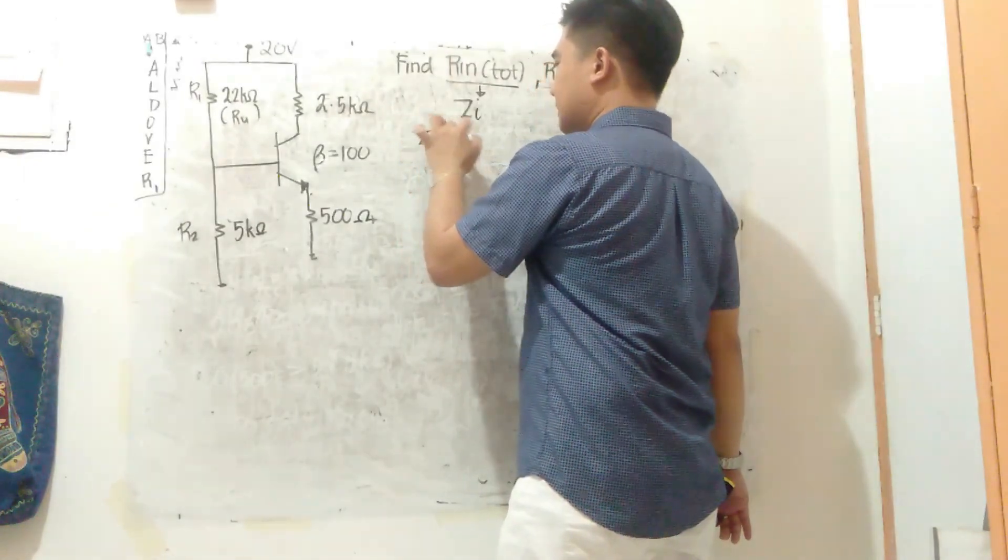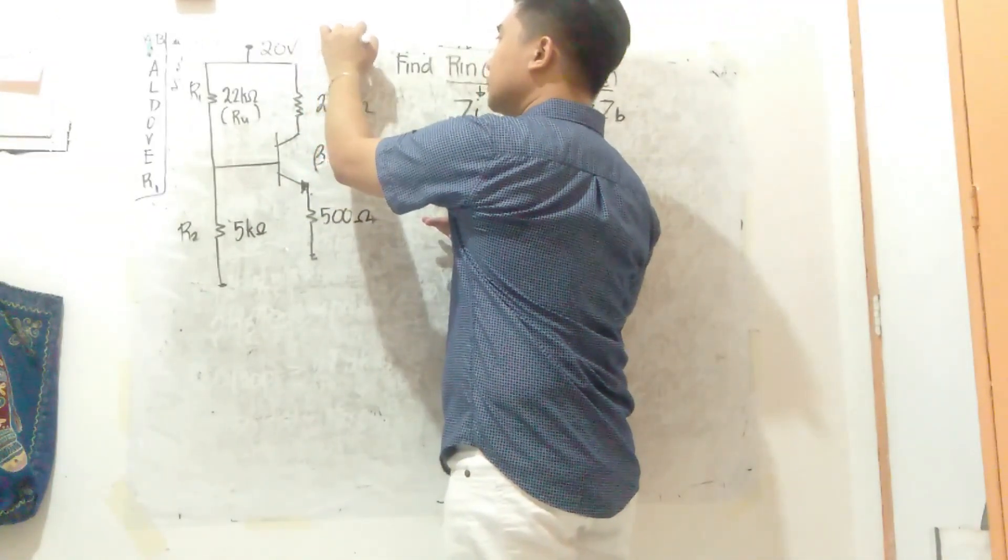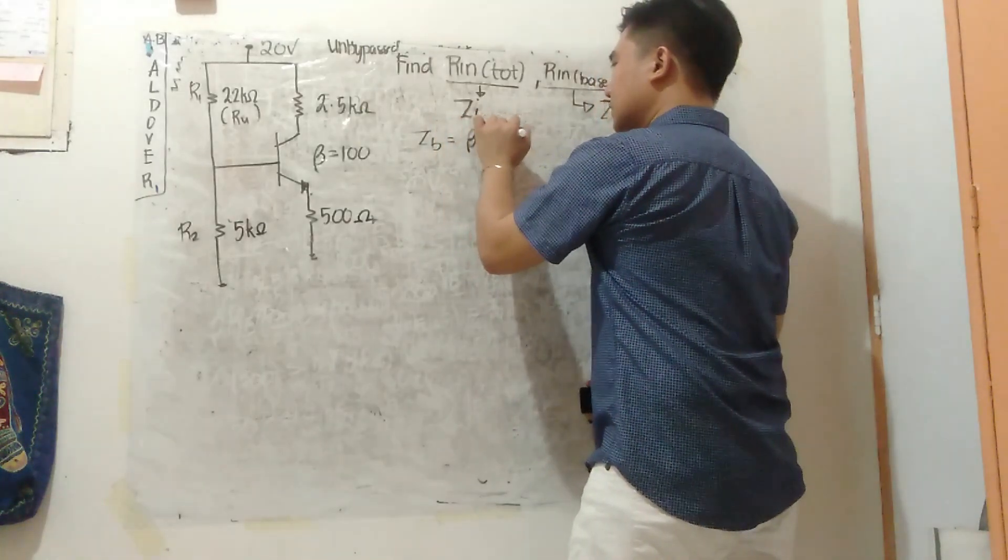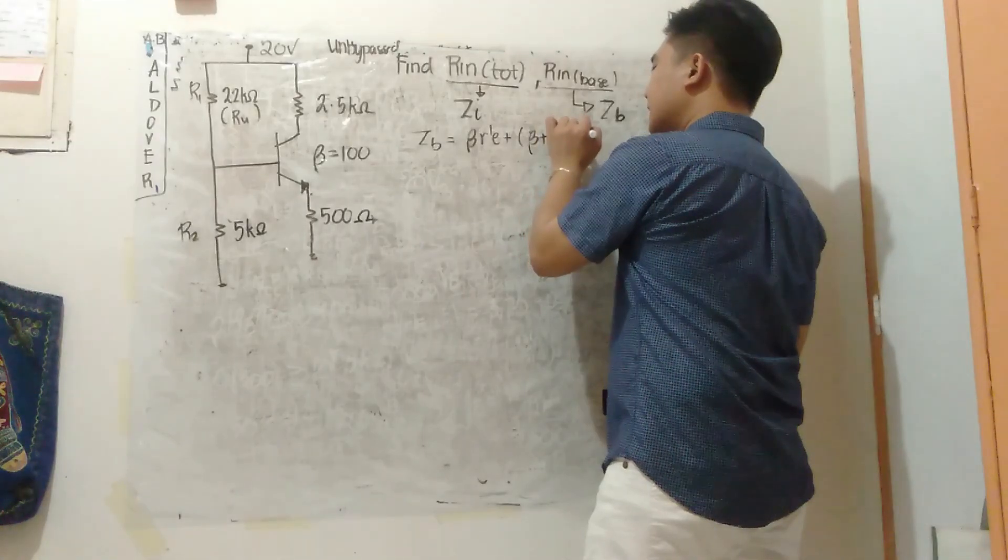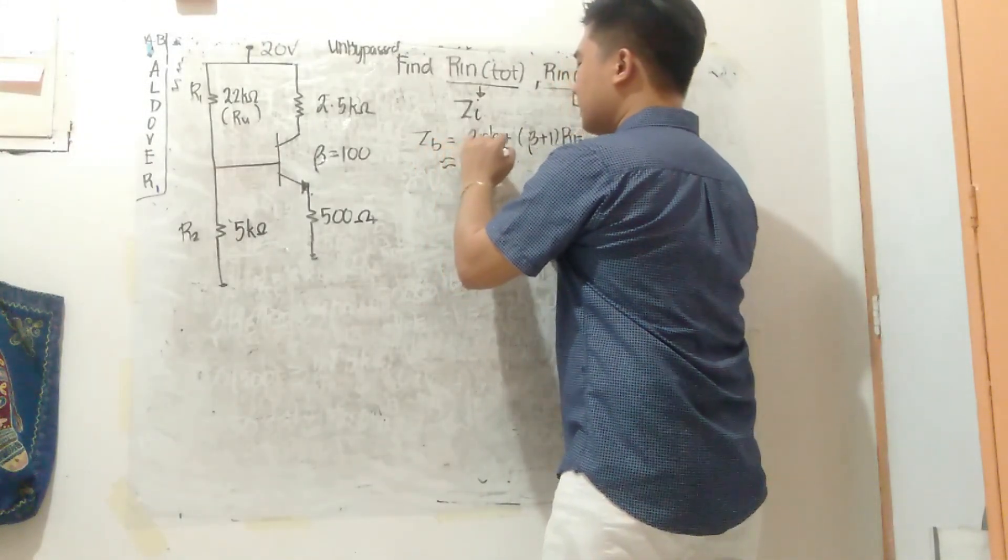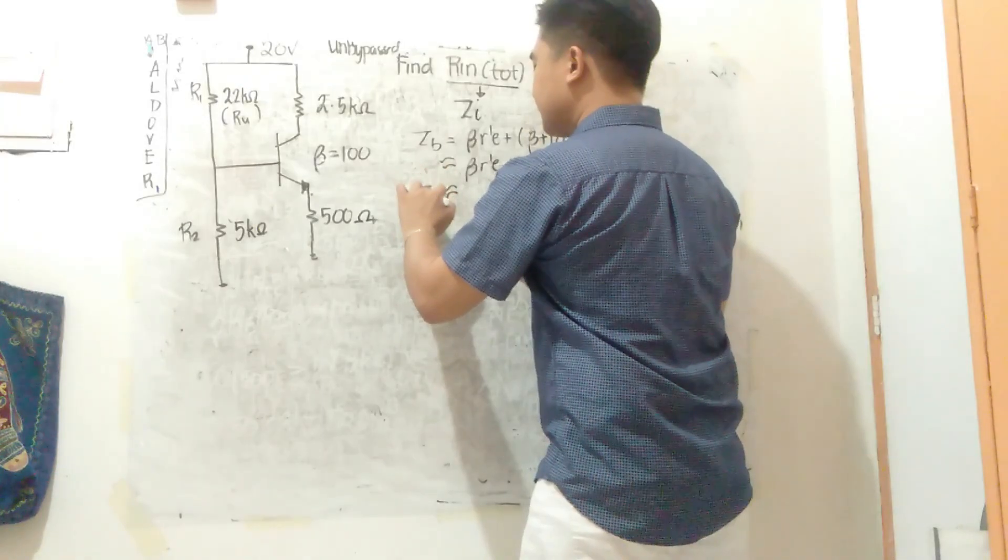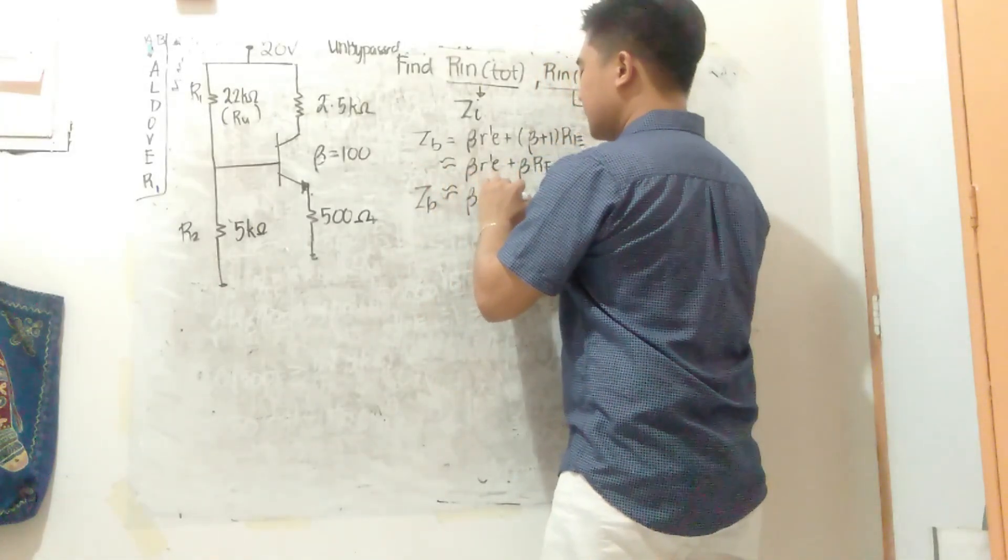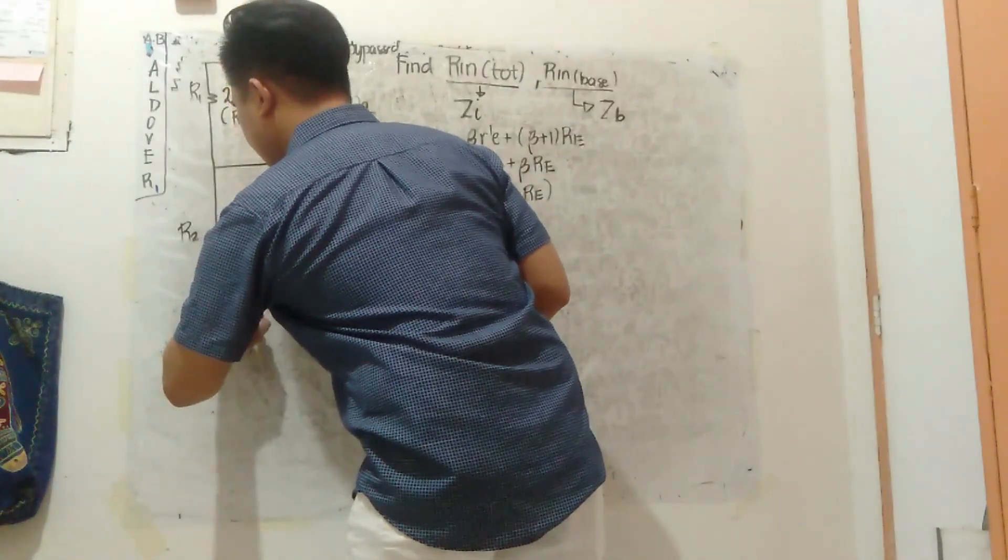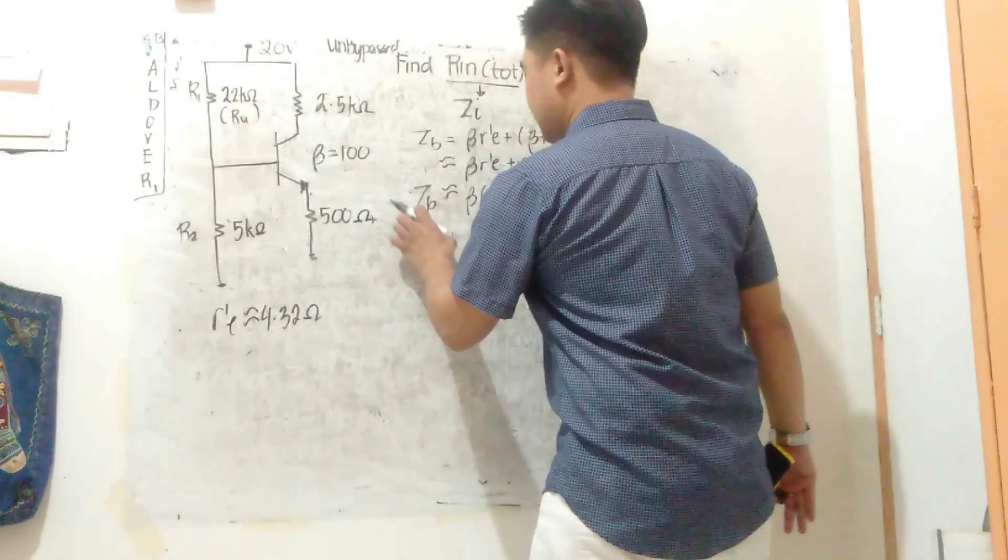ZB - it's not stated that there's a bypass capacitor, so consider this unbypassed, and the formula is different when unbypassed. So ZB is beta R prime E plus beta plus 1 times RE. But approximately, the 1 doesn't have much effect, so approximately it becomes beta R prime E plus beta RE. Factor out beta: ZB is beta times (R prime E plus RE).